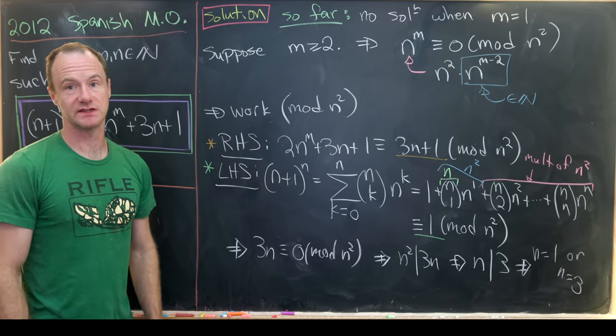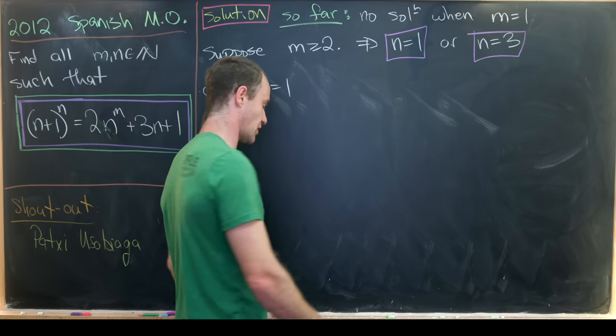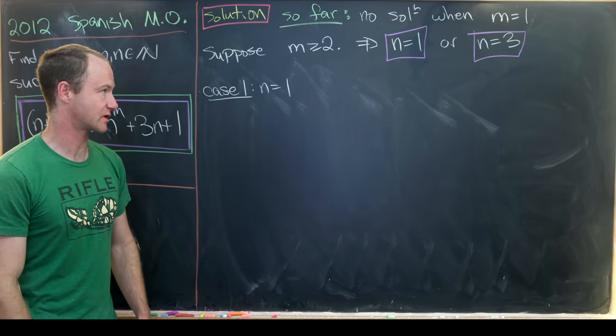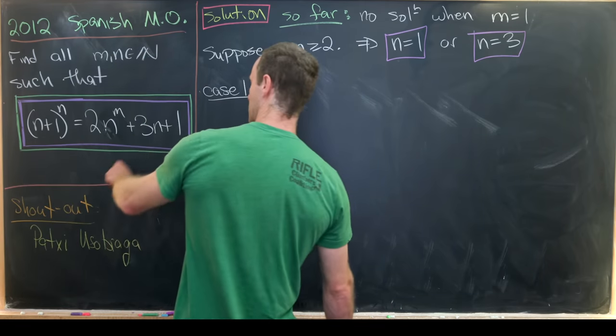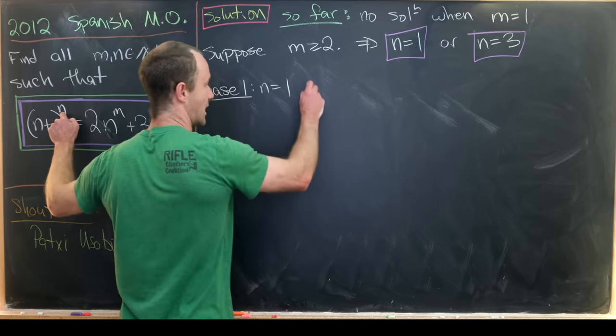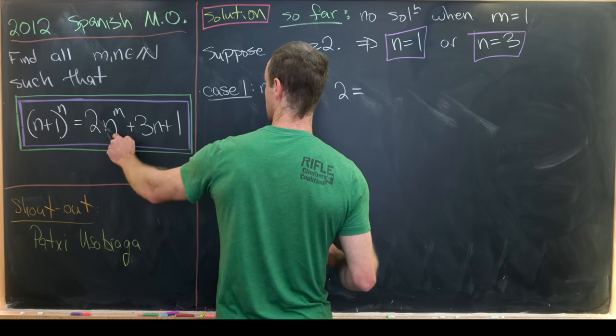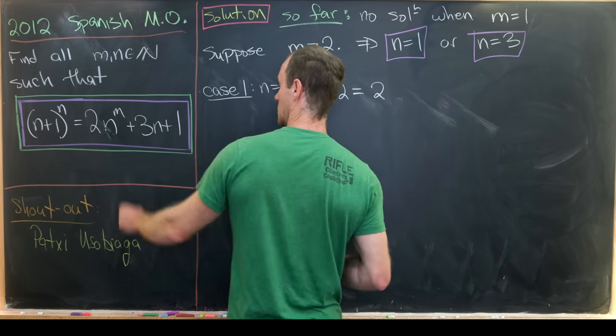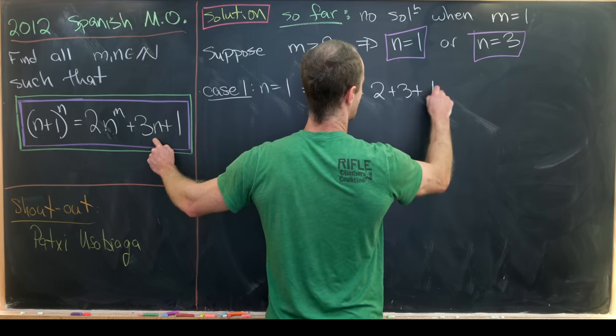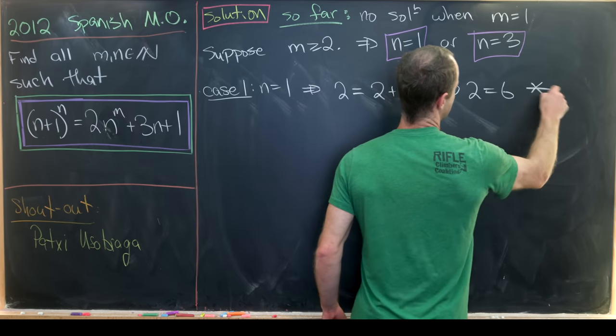And now let's analyze each of those cases. So working along the path that m is bigger than or equal to 2, we've determined that n is 1 or n is 3. And now we're just going to look at each of those separately. So in the case when n equals 1, this collapses quite a bit. So notice we'll have (1+1)^1. So in other words, we'll have 2 = 2(1^m), but that's 2, plus 3(1). So that's plus 3 plus 1. So in other words, we have 2 equals 6, but that's a clear contradiction.